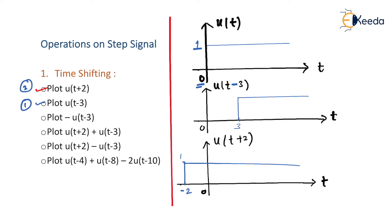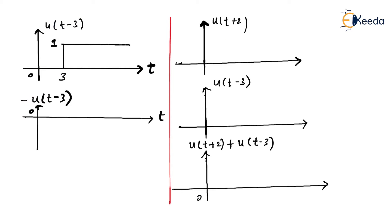Next, let us plot minus of u(t-3). We already have u(t-3) plotted, starting at t=3. The only change is the negative sign — this is the multiplying-by-k property where k=-1, so the original amplitude gets multiplied by minus 1. The signal still starts at t=3, but instead of amplitude +1, it becomes amplitude -1 after t=3.